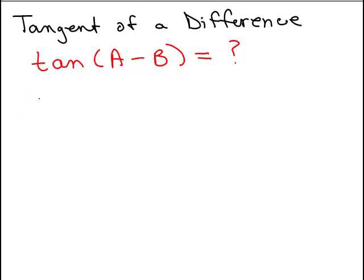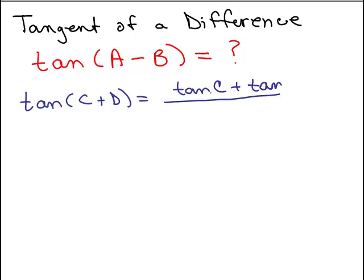So we don't know what that is, but we're going to start with what we do know. The tangent of A plus B, and in fact, I'm going to use different letters on purpose. How about we use C plus D. We know that formula is the tangent of C plus the tangent of D over 1 minus the tangent of C times the tangent of D.